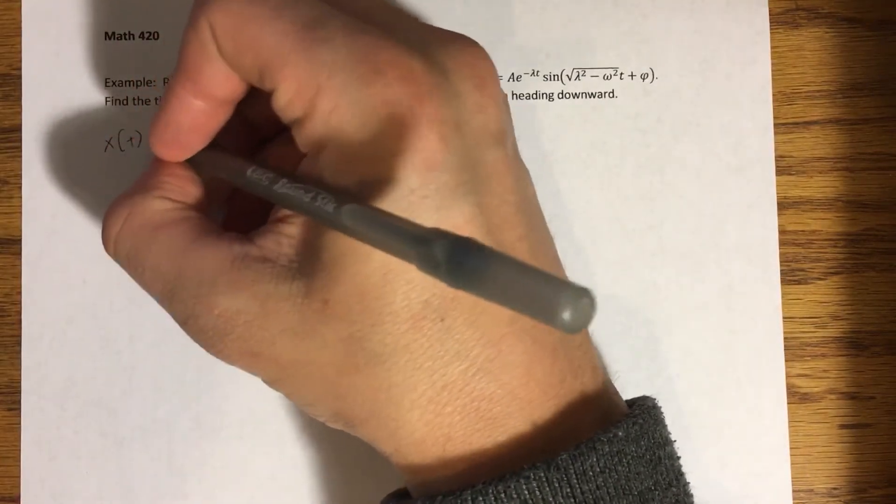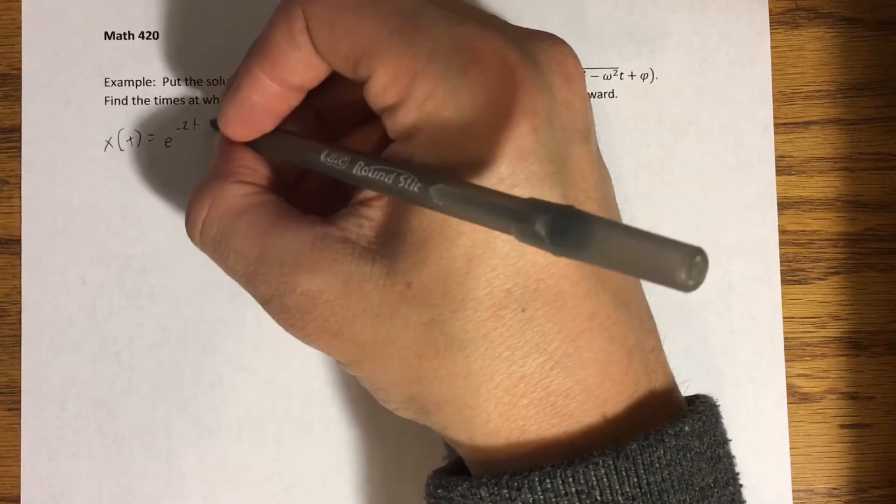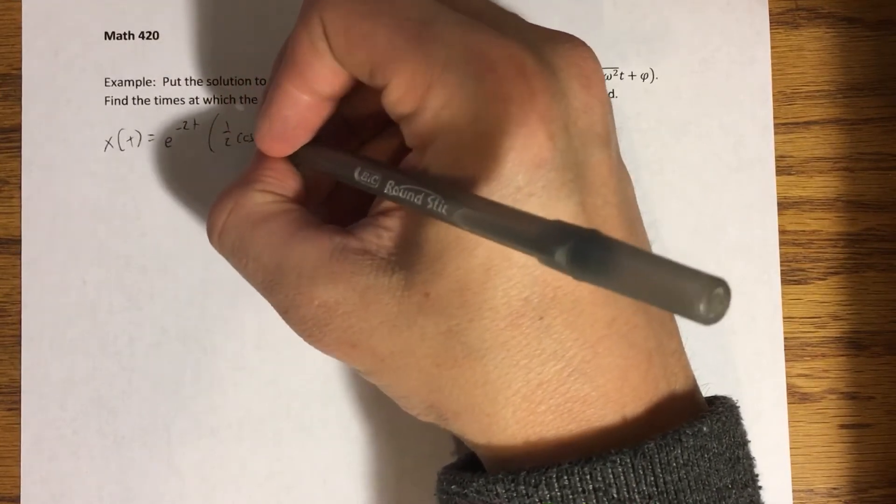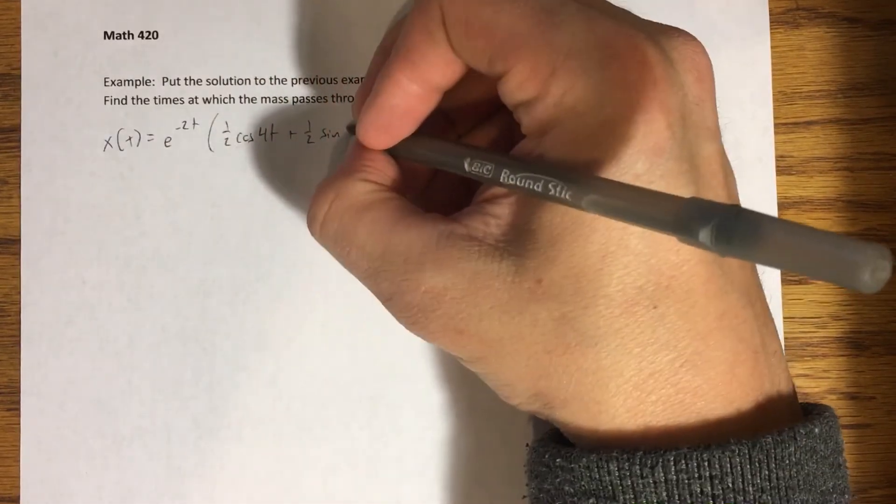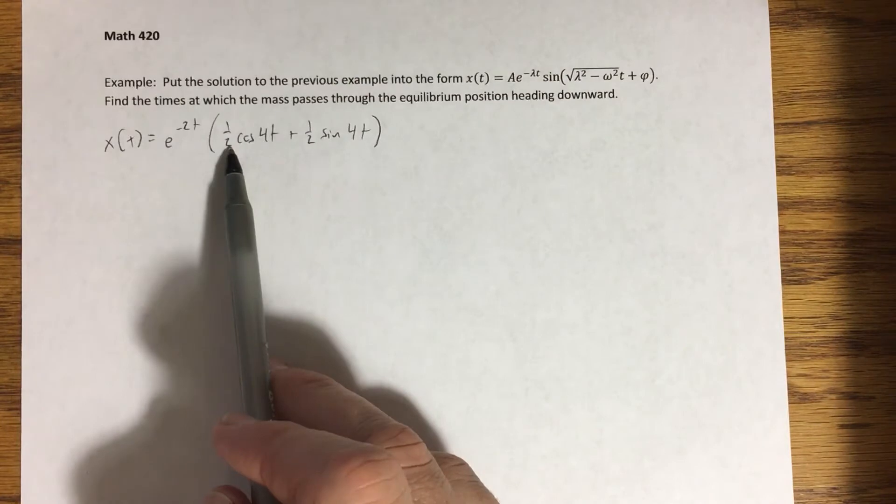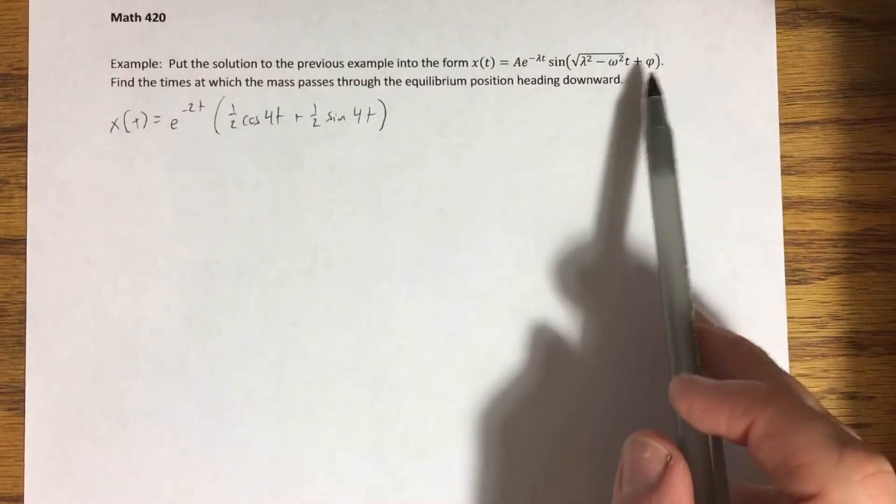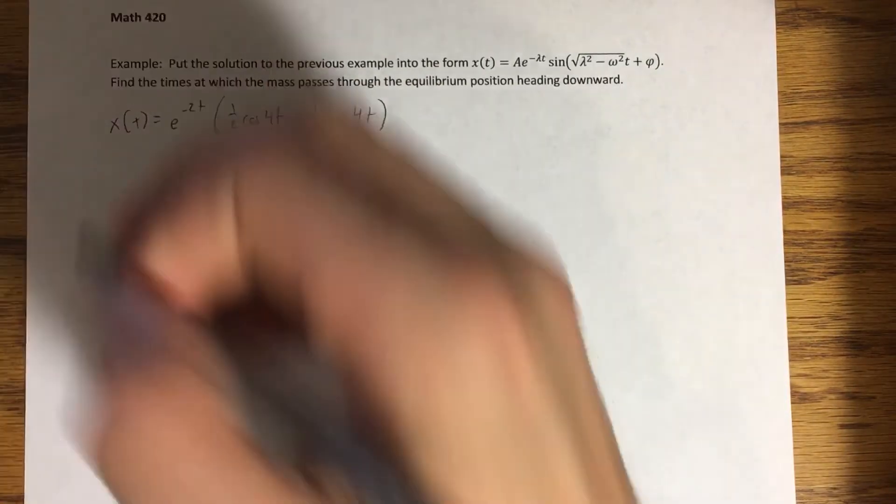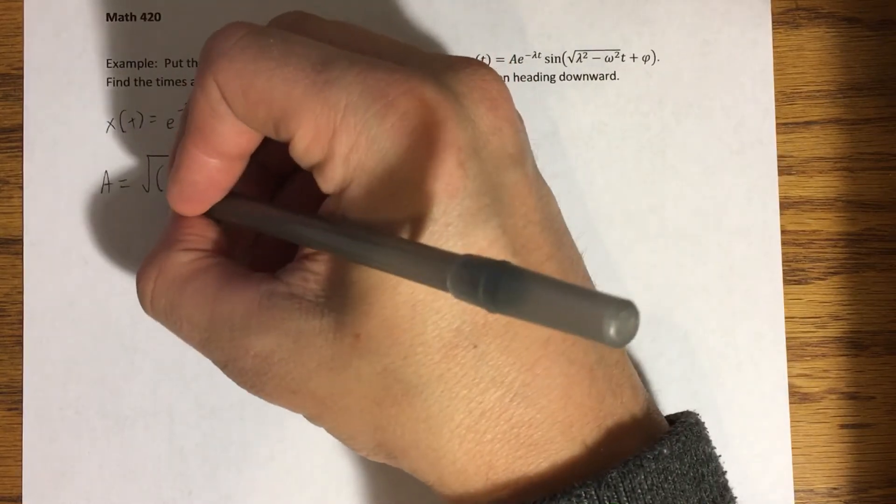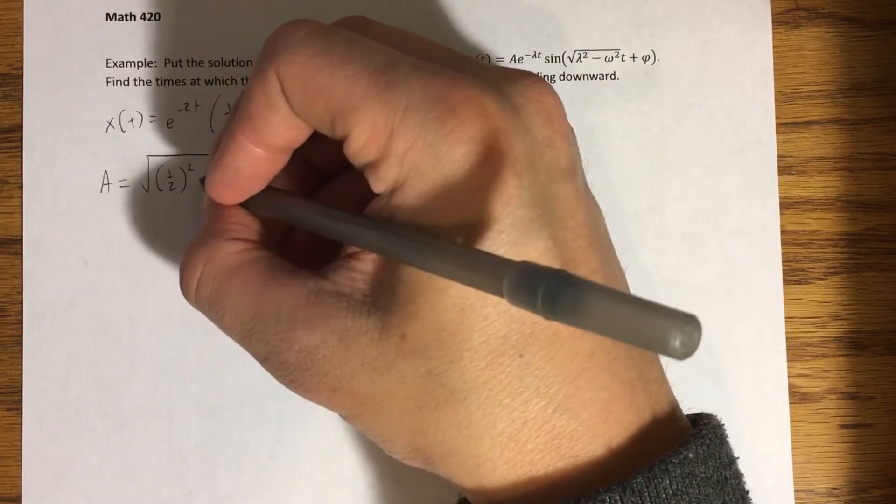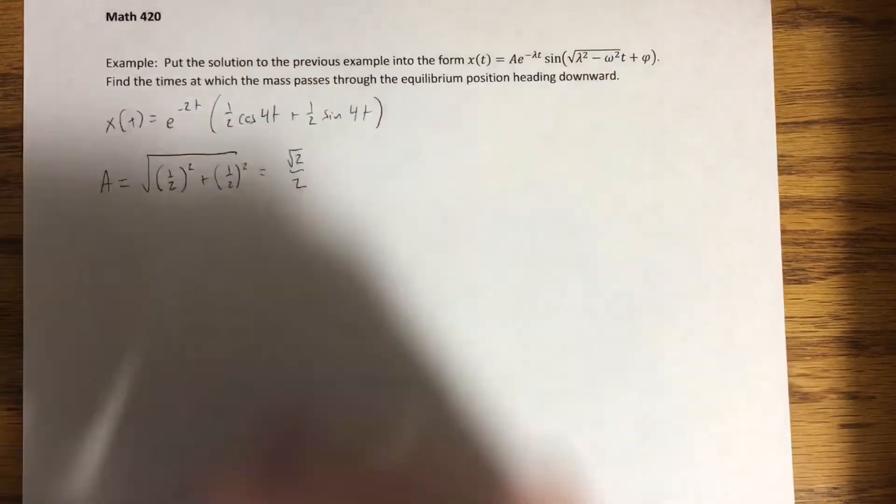And I'm going to distribute that one half back in. So we have x(t) equals e to the negative 2t times one half cosine of 4t plus one half sine of 4t. The reason I'm doing that is because that immediately shows me what C1 and C2 are equal to, which are used in the formulas for finding our phase angle and for finding A.